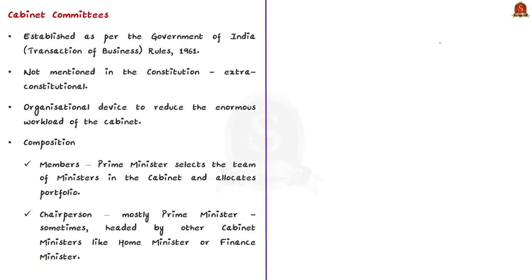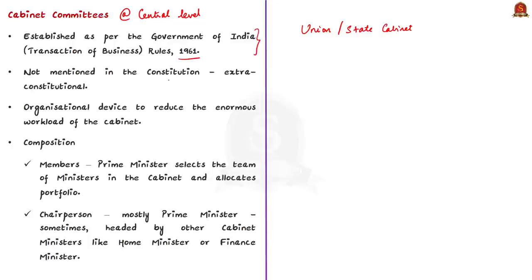Generally, Cabinet means the committee or body of senior ministers who are responsible for controlling government policy. You might have often come across news that the Union Cabinet has approved a project or the State Cabinet has approved a project. Cabinet Committees are established as per the Government of India Transaction of Business Rules of 1961, and they are not mentioned in the Constitution — so they are extra-constitutional bodies. They are basically an organizational device to reduce the enormous workload of the Cabinet.